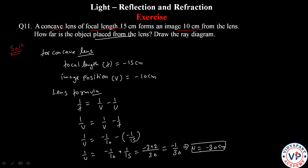The negative sign indicates the position of the object is on the same side as the image and focal point. The distance from the lens to the object is 30 cm.